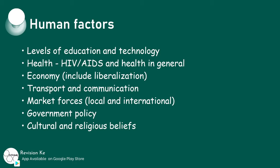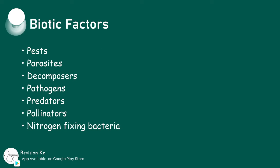Under biotic factors — meaning the living organisms that affect agricultural production — we are going to look at pests and how they affect agricultural production. We also have parasites, decomposers, pathogens, predators, pollinators, and nitrogen-fixing bacteria.